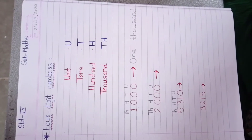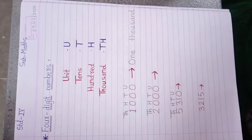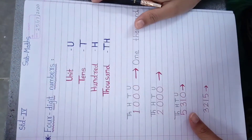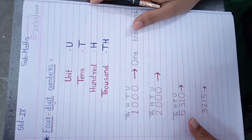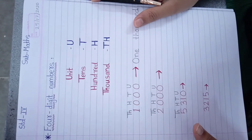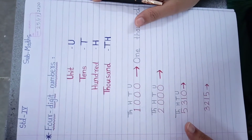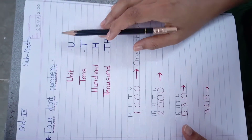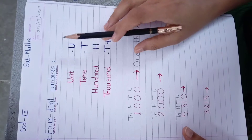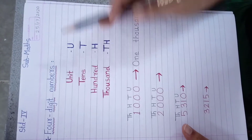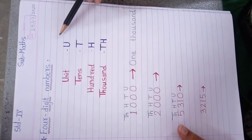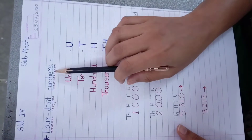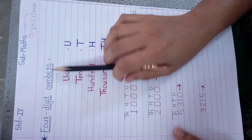Good morning students. In our last video we saw about the 3-digit number. Now you know 1-digit number, 2-digit, 3-digit — so today we will see about 4-digit numbers.